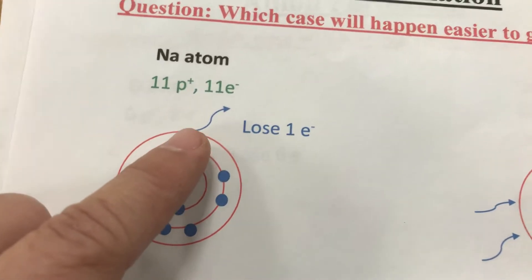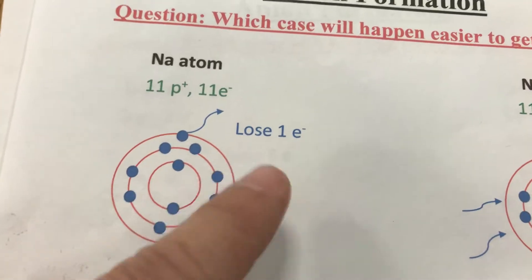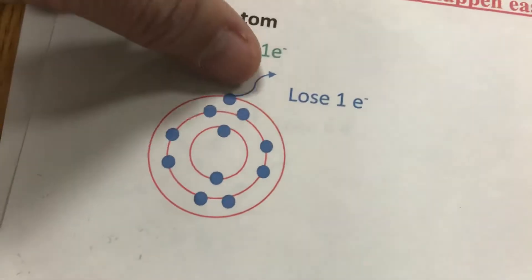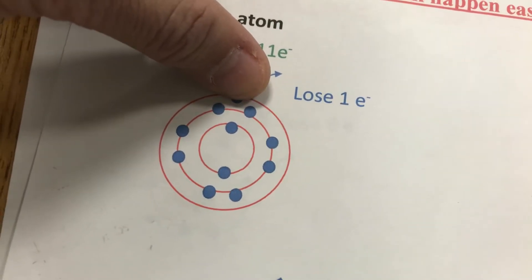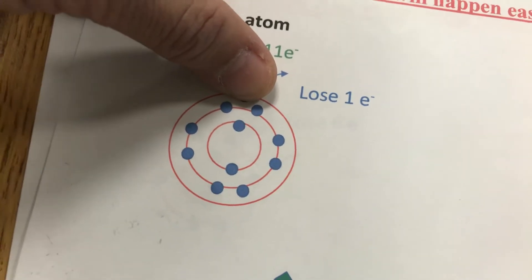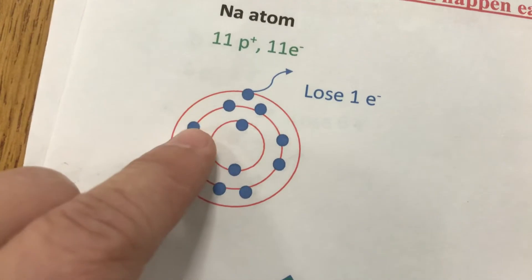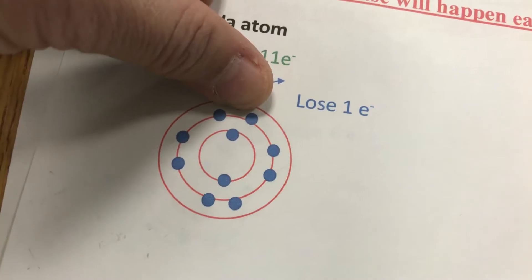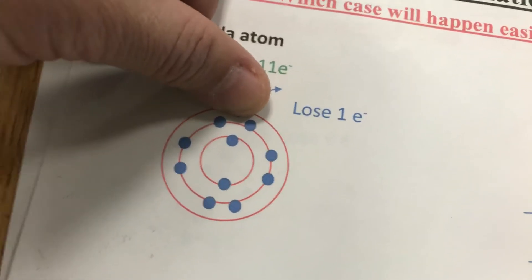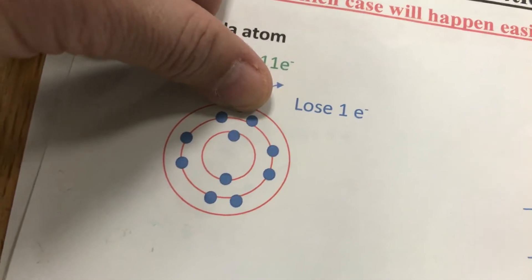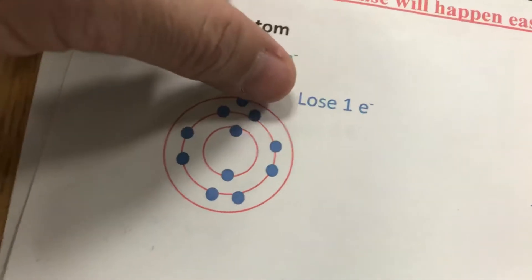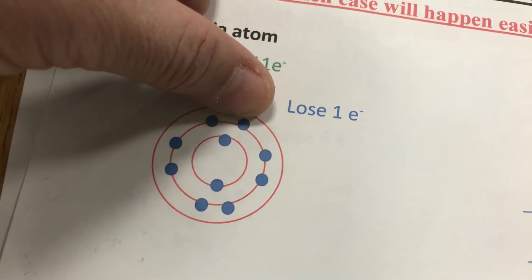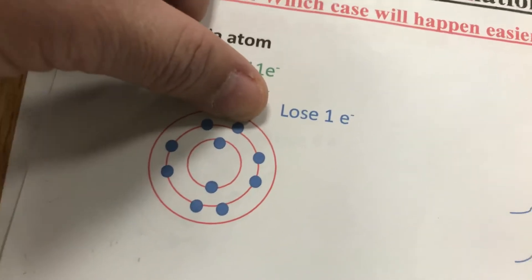I have one valence electron. The first question is: I can lose electrons, but lose how many? Since I have one valence electron, the easiest thing to do is just lose one electron. If you lose one electron, the third shell will disappear. If the third shell disappears, I will only have the first and the second shell. The second shell now becomes the outermost shell, and the second shell has eight valence electrons. So this case will be a full shell. That's the first situation.